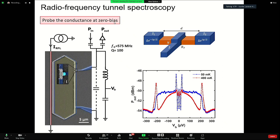As this normal part is under proximity effect, there are pair correlations present in N. What we get in the end is an S I S prime Josephson junction.